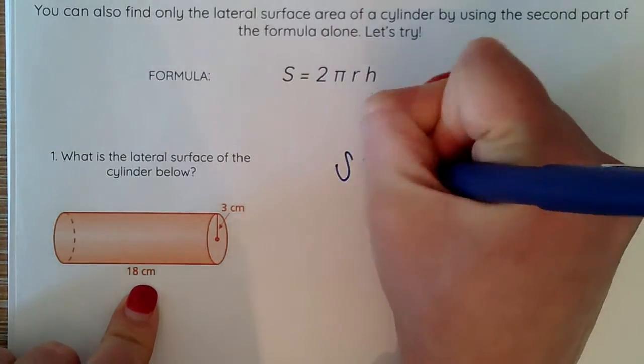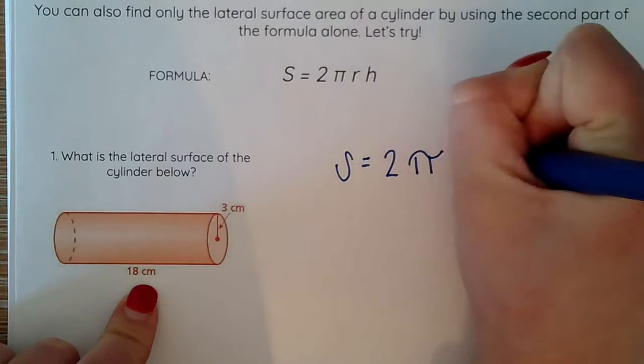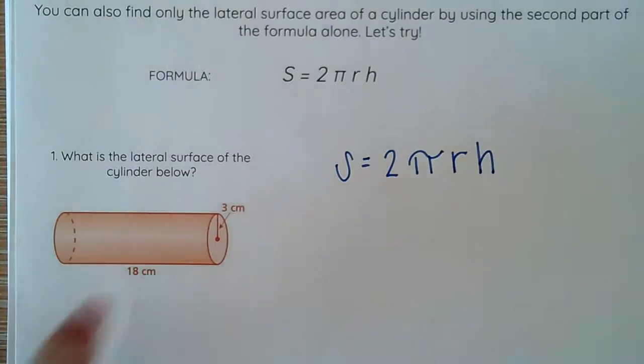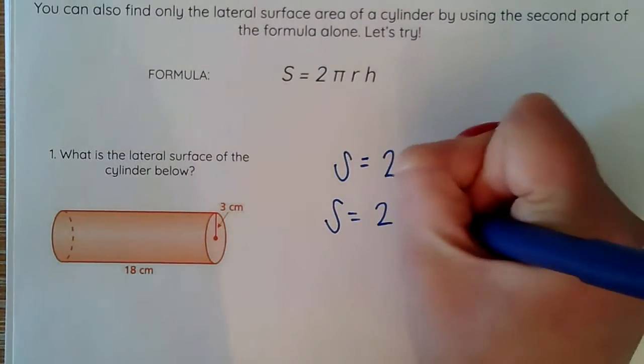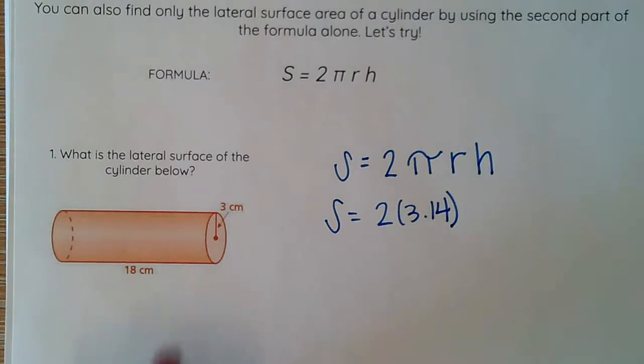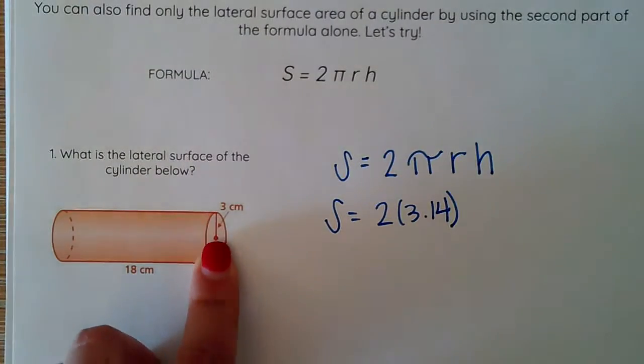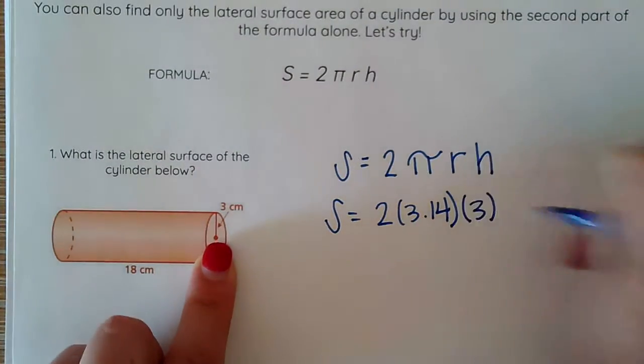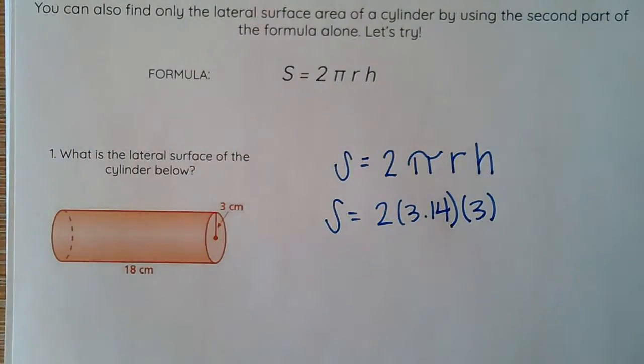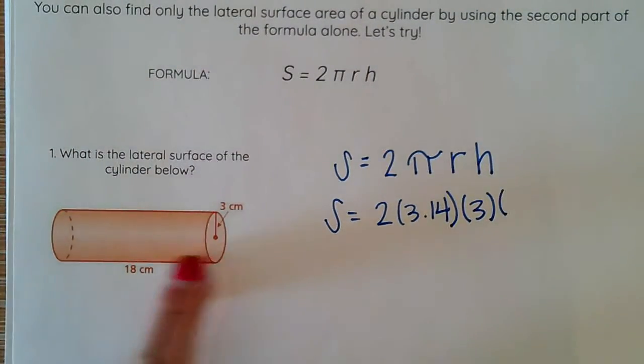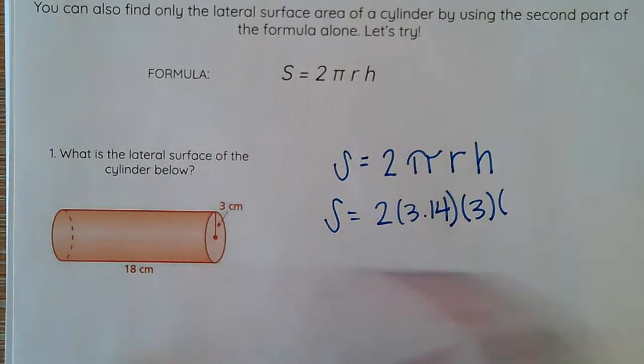Again, I just go ahead and plug in to my formula. I take a look and say, okay, S = 2. I replace 3.14 for π. My radius here is 3. I know it's my radius because it's only half of my circle. And then my height is the distance between my two bases, which is 18. Remember that your height will always be the distance between your bases.